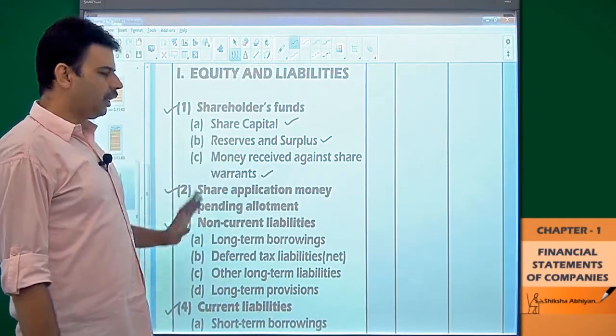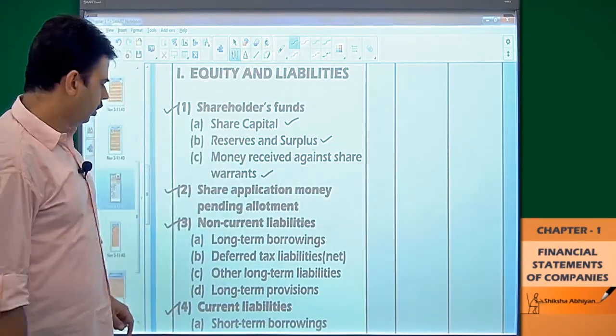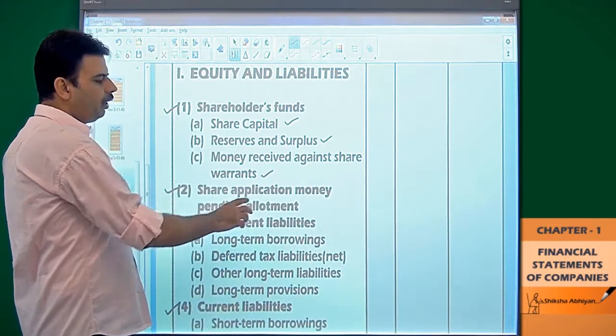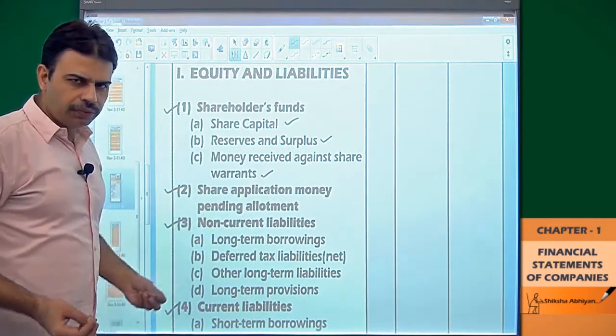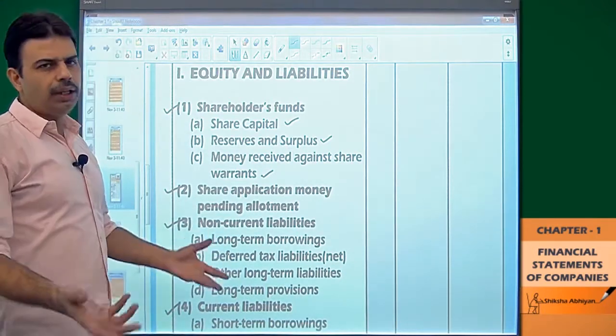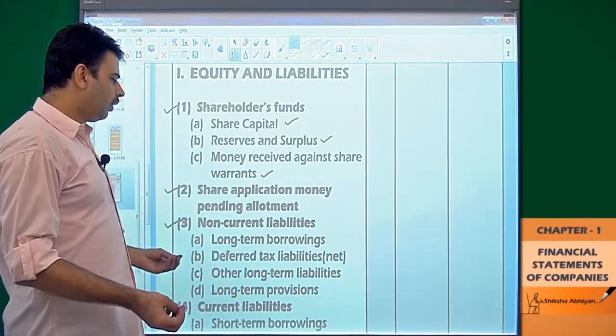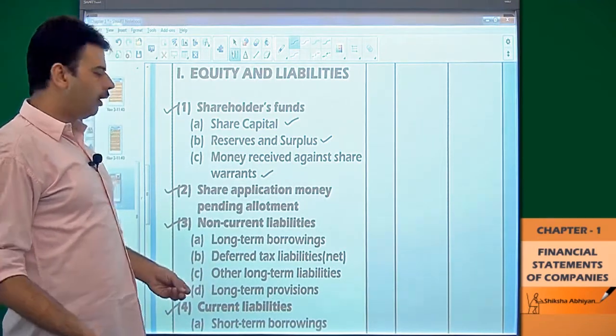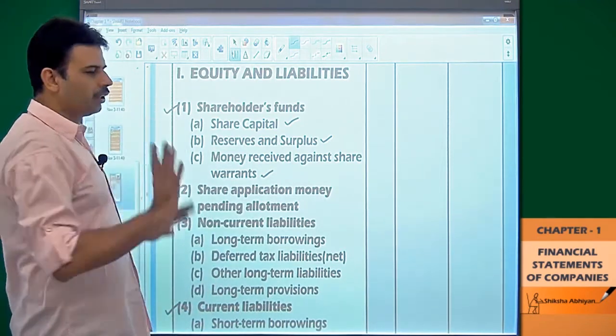Share application money pending allotment — the figure will be given as it is. At the 12th class level, I don't expect it to be given, but if it is given in the trial balance, then it will be placed as it is.